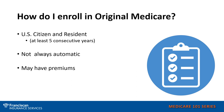Enrolling into Original Medicare is not always automatic. If you are on Social Security, it may be automatic — they would send you your card automatically. However, if you are not taking Social Security, then you will need to make sure you contact Social Security either by phone, online, or in person to enroll in your Original Medicare Parts A and B.